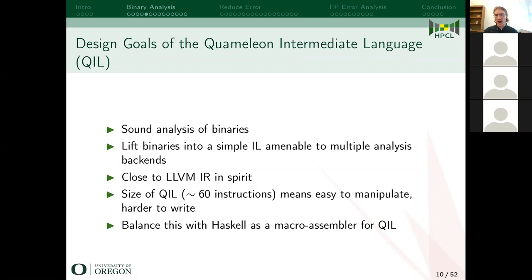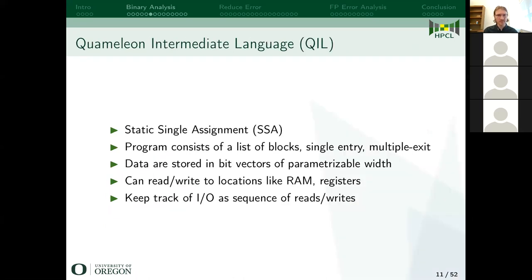We lose expressivity with QUIL, so it's harder to write programs in it. The way we balance this is we use a higher-level language — we use Haskell as a macro assembler of sorts for QUIL. QUIL is a single static assignment language, like many compiler ILs, and a program consists of a sequence of blocks which are single-entry multiple-exit. One important innovation is that we have a lightweight dependent type that keeps track of the bit vector width, helping catch a lot of bugs in the specification.